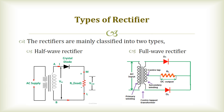The rectifiers are mainly classified into two types. One is half wave rectifier. The second one is full wave rectifier. In half wave rectifier, we are using a single diode only. But in full wave rectifier, we are using two diodes, D1 and D2. Now we will discuss the half wave rectifier and full wave rectifier one by one in detail.